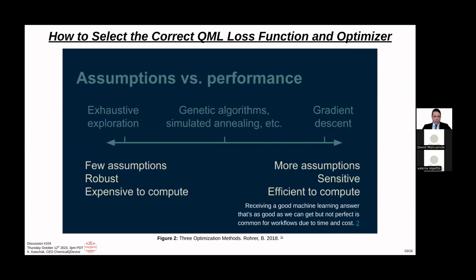Exhaustive exploration is not practical for many machine learning or QML workflows. It uses few assumptions and is more robust, but it's really expensive to compute — it finds exact answers. Some of you may have heard of genetic algorithms and simulated annealing or simulated quantum annealing, which does an even better job than gradient descent or Adam optimizer, and it's not as costly as exhaustive exploration.